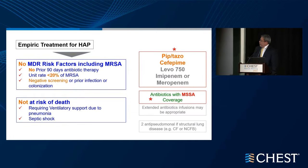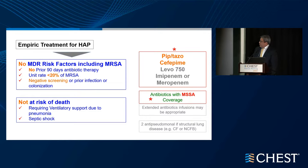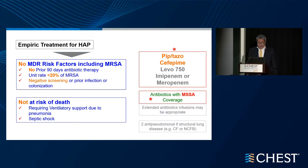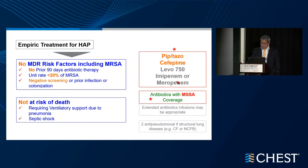For empiric treatment of HAP in patients with no risk factors — no prior antibiotic therapy in 90 days, the hospital and unit have low rates of MRSA, negative screening or no prior infections, and patients do not have significant risk of death requiring ventilator support or septic shock — these are the recommended empiric treatments. Common antibiotics include piperacillin-tazobactam, cefepime, and others. Most of these antibiotics have appropriate coverage for MSSA.